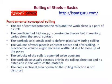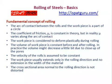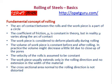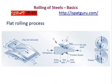The volume of the workpiece is constant before and after rolling. In practice, the volume might decrease a little bit due to the closure of the pores. The volume remains the same though the length increases, and the velocity in the rolling direction increases during rolling. The velocity of the rolls is assumed to be constant. The workpiece is usually extended only in the rolling direction, and no extension in the width of the material is assumed to take place. The cross-sectional area normal to the rolling direction is not distorted.